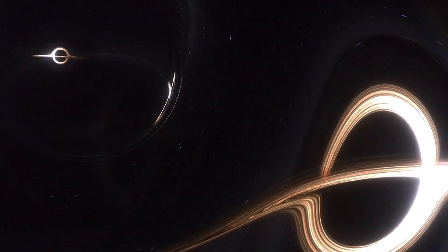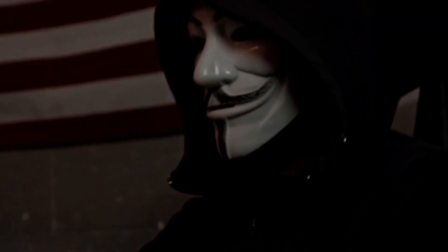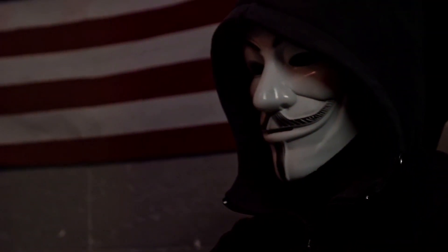Black holes have a profound effect on time and space due to their extreme gravity. Let's break it down. Space: The gravity of a black hole is so strong that it warps the fabric of space around it. This warping is what we perceive as the hole's gravitational pull. The closer you get to a black hole, the more space is curved, leading to phenomena like gravitational lensing, where light bends around the black hole.